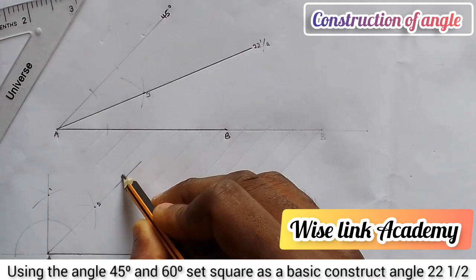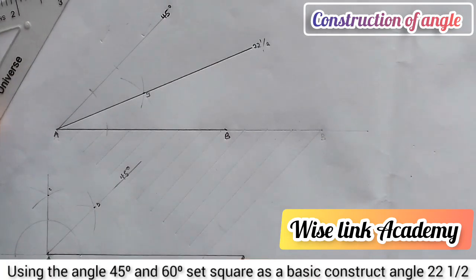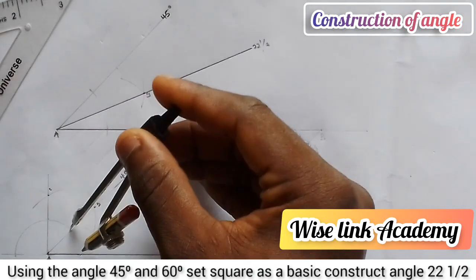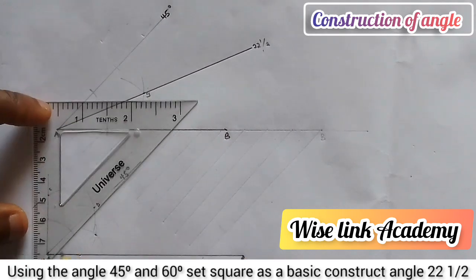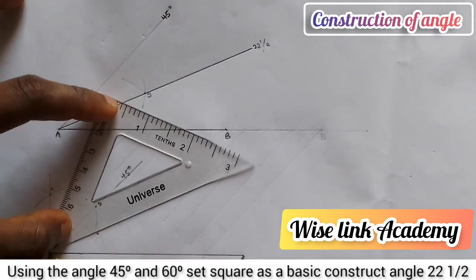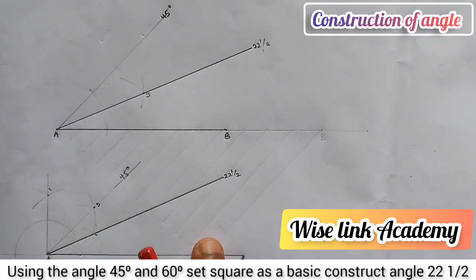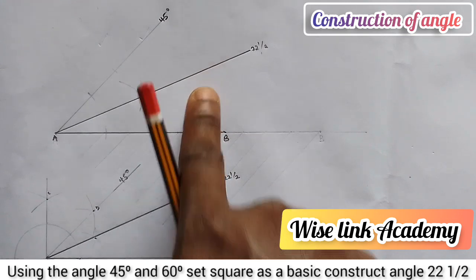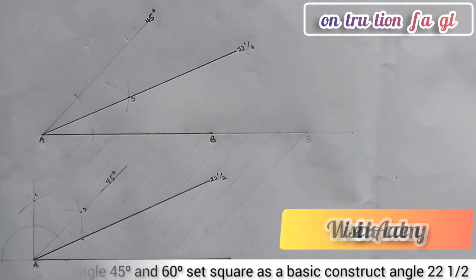Now I have 45°, and half of 45 is 22.5°. I take the measurement of these two points, strike arcs, and where they meet I draw a thick line. That gives me my 22 and a half degrees using the compass method. Thanks for watching, and welcome to Wiselink Academy.